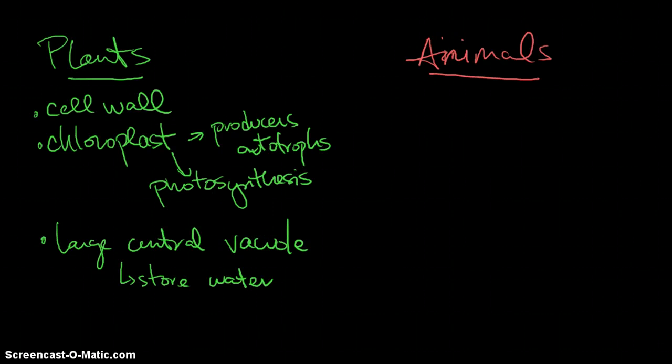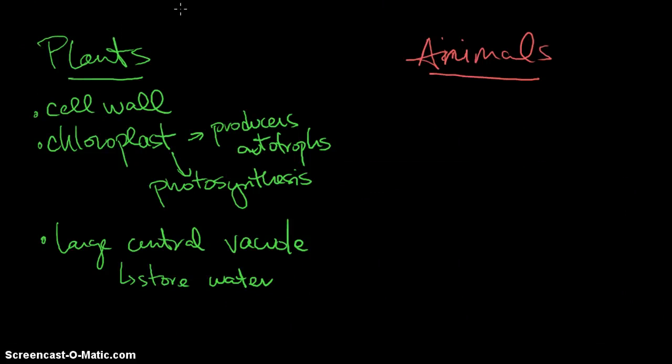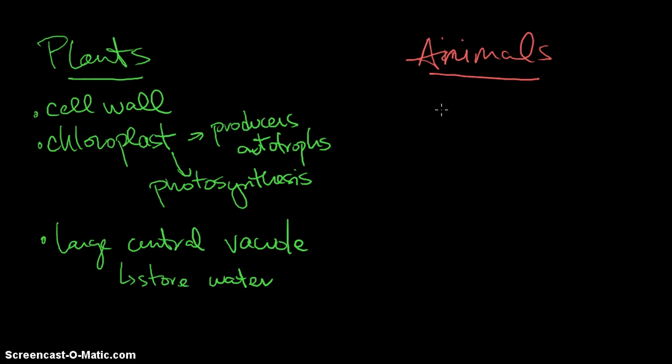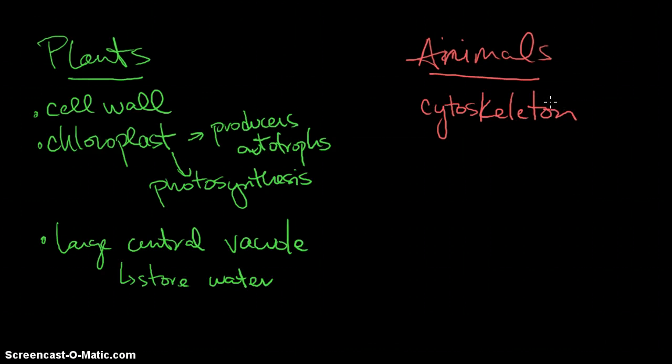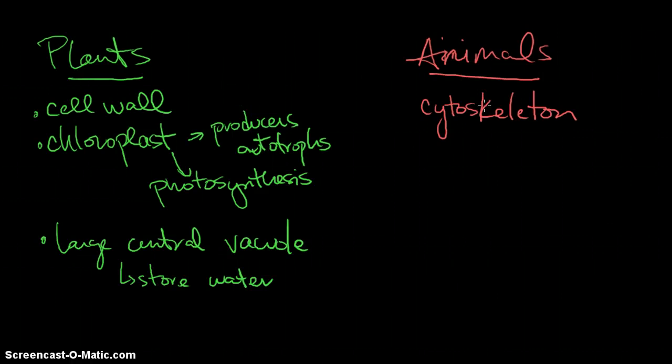All right, so let's talk about unique things about animals. Animals obviously don't have a cell wall, they don't have chloroplasts, they don't have a large central vacuole. But what is pretty unique to animals is that they have, that we have, cytoskeletons. These are not like our bones, but these are fibers within our cells that help them move. Remember, plants don't move, animals do. So this allows us to move a little bit.